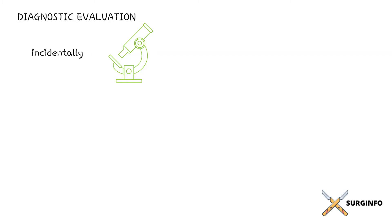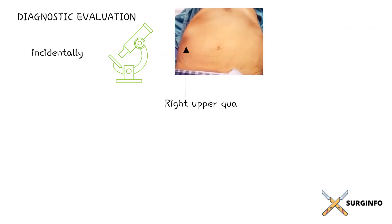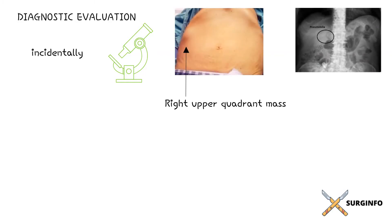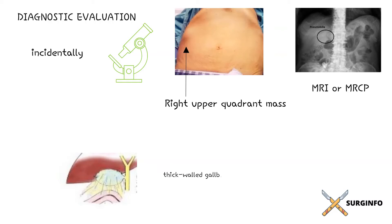A diagnosis of xanthogranulomatous cholecystitis should be considered in the following clinical scenarios: a right upper quadrant mass and/or pneumobilia suggestive of an enterobiliary fistula on abdominal imaging. In such cases, MRI and magnetic resonance cholangiopancreatography (MRCP) should be performed to delineate the biliary tree prior to surgery. In patients undergoing cholecystectomy, a markedly thick-walled gallbladder with extensive dense fibrous adhesions to neighboring structures should raise suspicion for xanthogranulomatous cholecystitis.